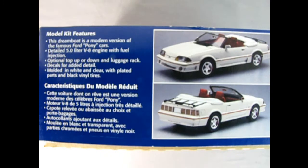This side of the box tells us all about the model kit features that we get. Says this dream boat is a modern version of the famous Ford pony cars. Detailed 5.0 liter V8 engine with fuel injection, optional top up or down, and luggage rack. Decals for added detail, molded in white and clear with plated parts and black vinyl tires. There's a front three-quarter view and a rear three-quarter.